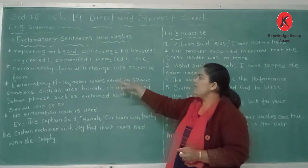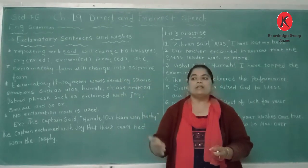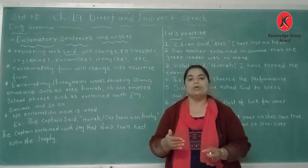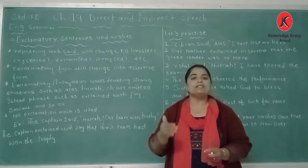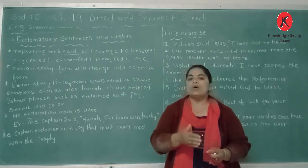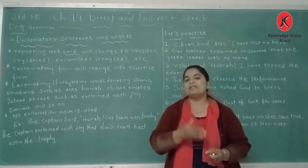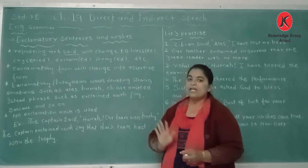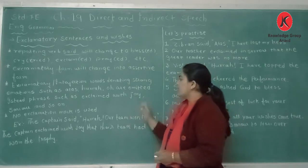Exclamatory form will change into assertive form. The exclamatory sentence will change into assertive. Assertive means — you know, declarative sentence has two parts: one is assertive and one is non-assertive. Assertive also has two parts: positive and negative. So, declarative sentence includes non-assertive and assertive sentences.